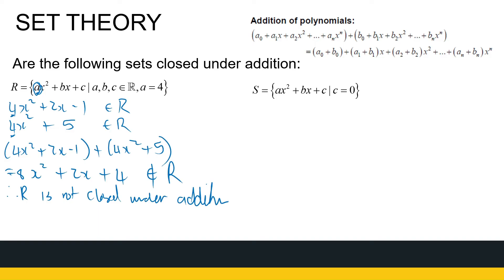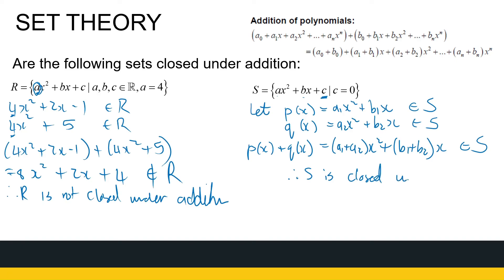The set S, however, is closed. And I've gone over the process a couple of times, so we're going to go a bit faster. This is polynomials where not necessarily a and b has no restriction, but c is definitely 0. So if I say, and I'm going to name them because I don't want to write them out all the time, let P(x) be equal to a1x² plus b1x plus 0 because c is 0. So that's an element of S. And Q(x), a2x² plus b2x. That's also an element of S. If I add them together, I get (a1 plus a2)x² plus (b1 plus b2)x plus 0. So again, that sum is in S. So S is closed under addition.